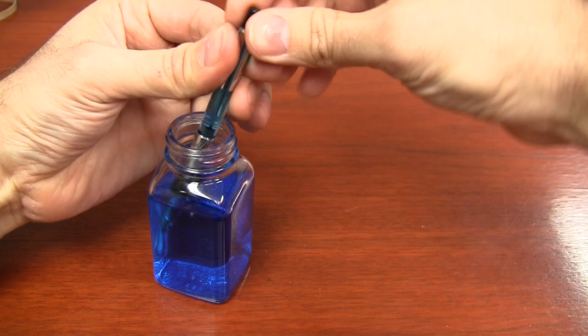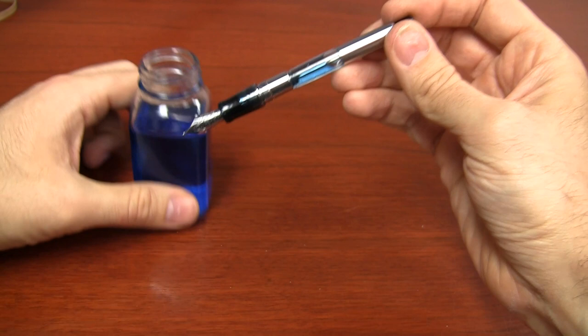So that is how you fill your Pilot Custom 74. You got to really go after it. You got to attack that thing. And you got to make sure that you are pushing that button with some real intention. If you have any other questions about the CON-70, the Custom 74, any other Pilot stuff, or any fountain pen stuff at all, leave me a comment on YouTube or on Goulet Pens. I'd love to hear what you have to say. So, thanks for watching. I appreciate it. I always like hanging out with you. And be sure to write on.